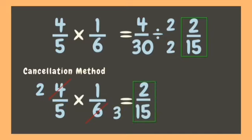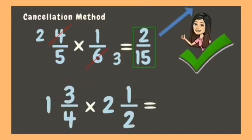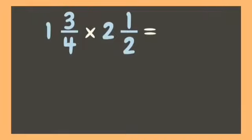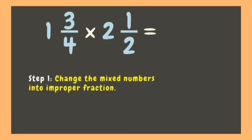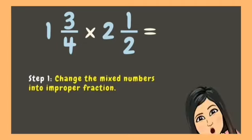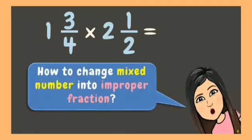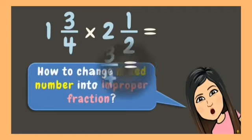Now we got the same answer. This time we are going to multiply mixed numbers. In multiplying mixed numbers, we need to change them into improper fractions. But how are we going to change a mixed number into an improper fraction? Let's have a quick review.